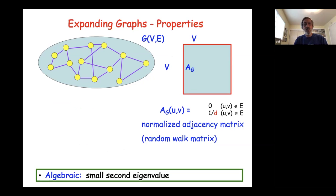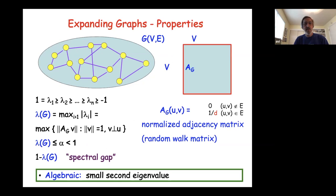For the probabilistic view: you start from some vertex, go to a random neighbor, then another random neighbor, and so on. It will converge to the uniform distribution because the graph is regular. In expander graphs, it converges in logarithmic time — as fast as you can be, up to a constant, because the diameter of such a graph is logarithmic. For the algebraic view, you look at the normalized adjacency matrix of the random walk: zero if there is no edge, one over D if there is. It's a symmetric matrix with real eigenvalues, and the important parameter is λ(G) — the maximum absolute value of any non-trivial eigenvalue.